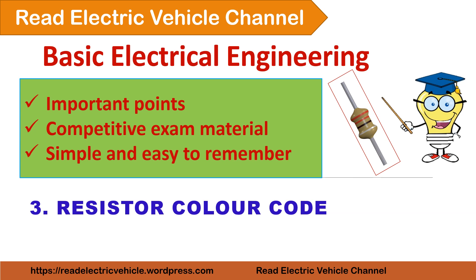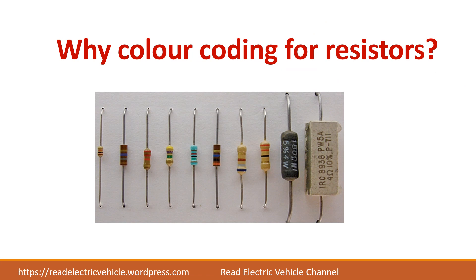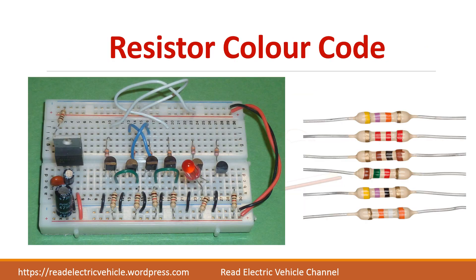Let us see about the resistor color code. Why do they use color coding for resistors? You can see different types of colors mentioned on resistors. On higher watt resistors, values are written numerically, but on small resistors only color coding is used because it is very difficult to print the numerical value. So color coding is an easy way to identify the value of a resistor. These are the small resistors normally used in lab for mini projects, and it is always necessary to identify their value.